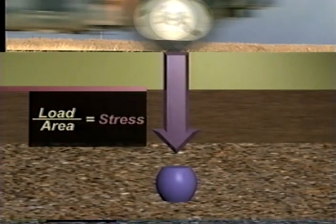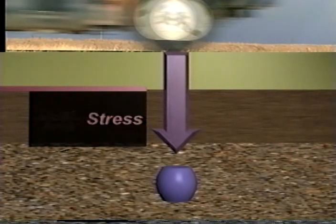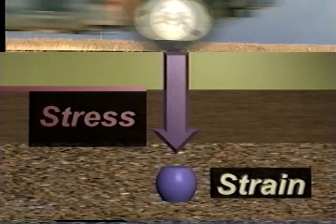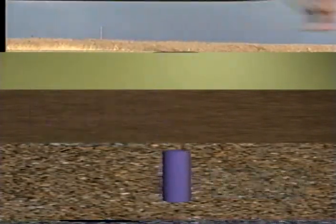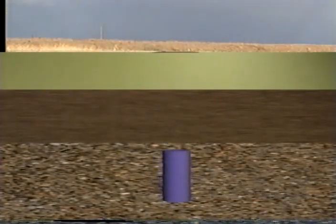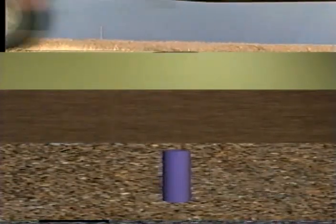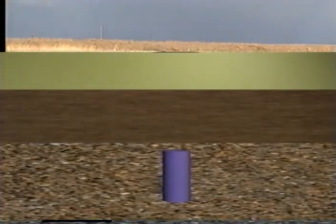Stress is the technical term we use to refer to load divided by area. As a result of the stress, the material exhibits the characteristic called strain — that just means it becomes distorted. And then it rebounds. As shown with our subgrade cylinder here, the material is distorted in all directions, all at the same time, over and over again.